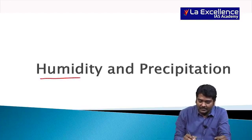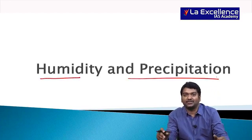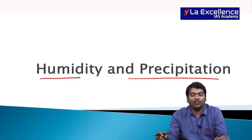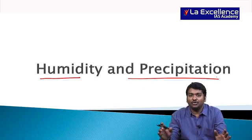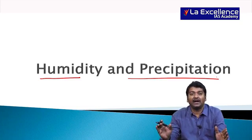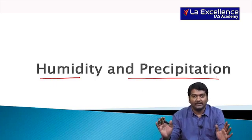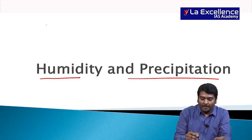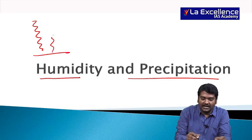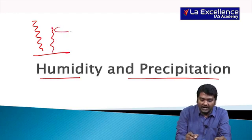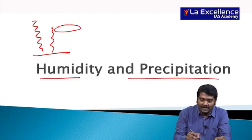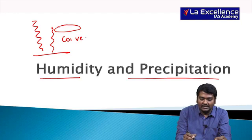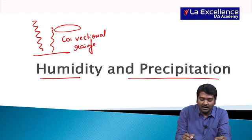The next important topic is humidity and precipitation — how exactly you get rainfall. With increasing temperature, humidity decreases. Because of high temperature, if air starts rising above it cools and forms clouds. This process of heat making warm air rise is called conventional rainfall.